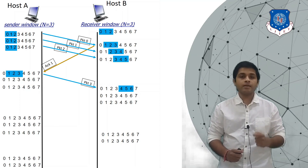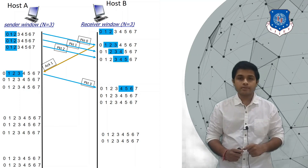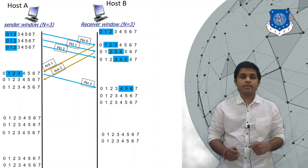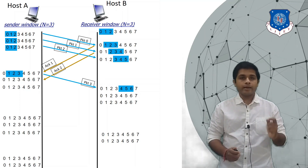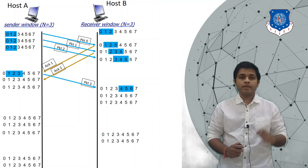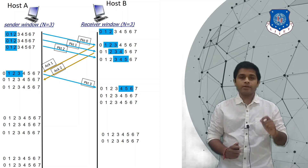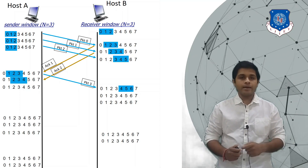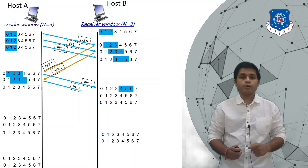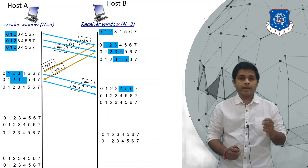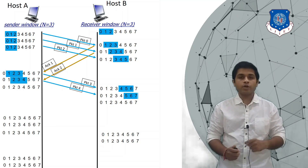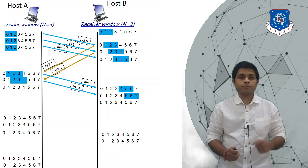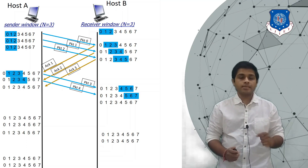For received packet 1, B will send acknowledgement ACK 2. As A receives ACK 2, it finds that packet 1 is received, so the window will slide and A will send the next packet, which is packet 4. As B receives packet 4, the window will slide, and B will send the next acknowledgement for packet 2, which is ACK 3.